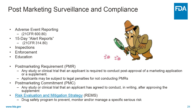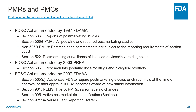Also, the FDA can require or the applicant may volunteer to implement a REMS, or a risk evaluation and mitigation strategy, to prevent, monitor, or manage a specific known risk of a drug or biologic. Over the past few decades, the FDA's authority for PMCs and PMRs has grown. The Food and Drug Administration Modernization Act of 1997 required applicants to annually report the status of their clinical and non-clinical PMCs and PMRs, and for the FDA to track and report on all PMCs and PMRs annually in the Federal Register.